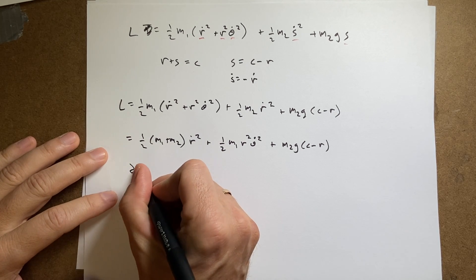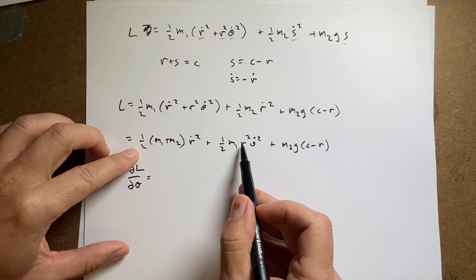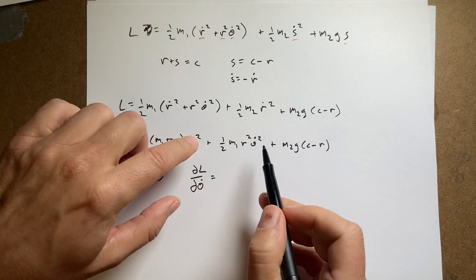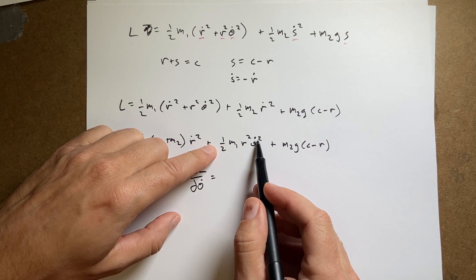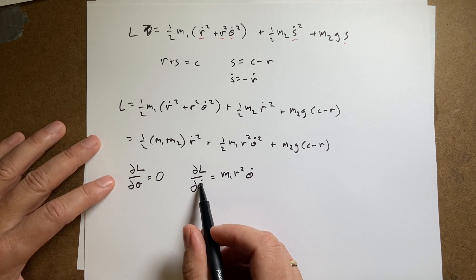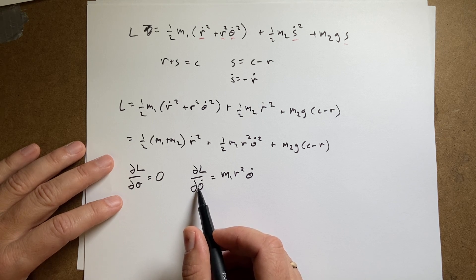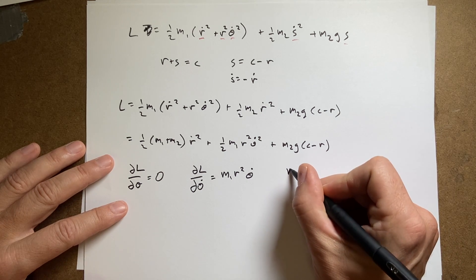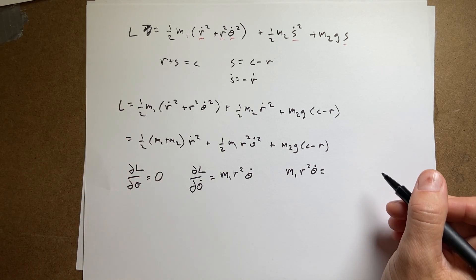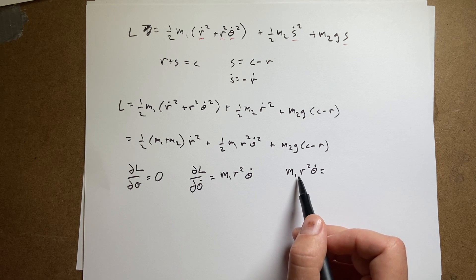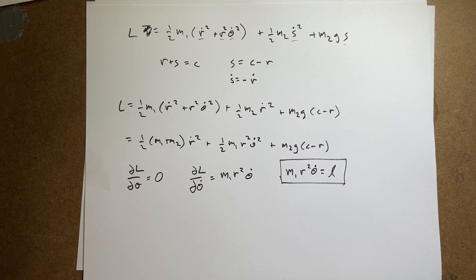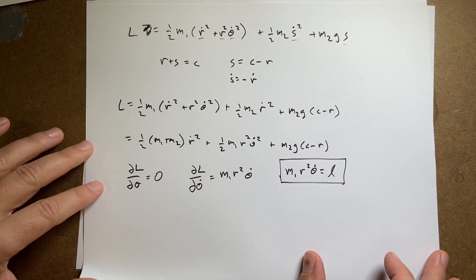Let's do the Euler-Lagrange equation for theta first. The partial of L with respect to theta is zero — theta doesn't appear explicitly anywhere. Then the partial of L with respect to theta-dot gives m1 r squared theta-dot. The derivative of this with respect to t equals zero, meaning this is constant with respect to t. So m1 r squared theta-dot equals a constant, which I'll call lowercase l — the angular momentum. We have conservation of angular momentum here.